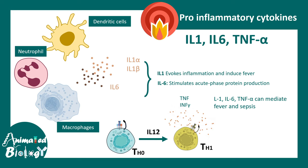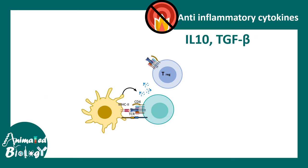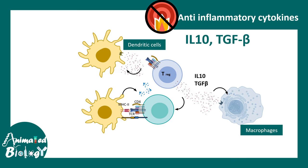IL1 and IL6 are critically involved in fever and sepsis. In contrast, some interleukins prevent inflammation — interleukin 10, secreted by T regulatory cells, prevents excessive T cell activation and balances immune responses. These anti-inflammatory cytokines also act on macrophages and dendritic cells to prevent inflammatory responses.